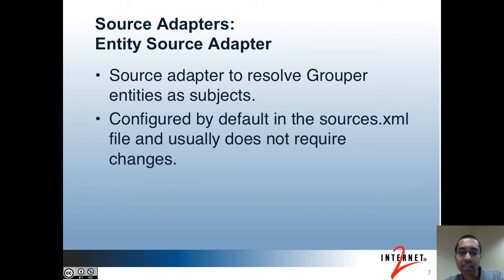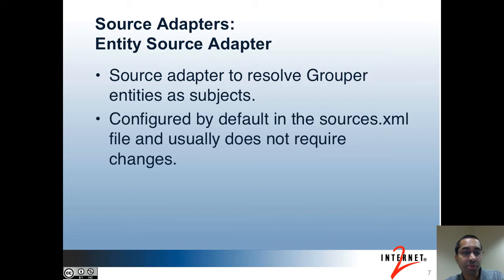The next source adapter is the entity source adapter. Again, this is configured in the sources.xml file and usually doesn't require any changes. This is used to resolve Grouper local entities as subjects if you're using this feature of Grouper. The subject type here is application.